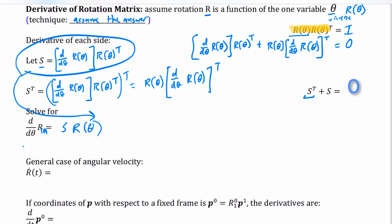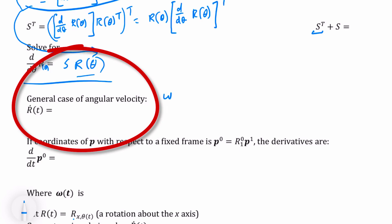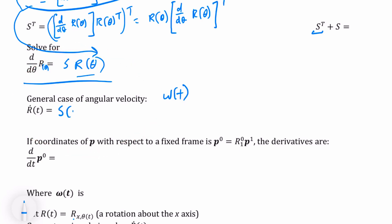The time derivative of a rotation matrix is simply a skew-symmetric matrix times the current rotation matrix. In the general case for angular velocity rotating around some time-varying axis omega, the time derivative of R(t) is the skew-symmetric of omega(t) multiplied by the current rotation matrix R(t).